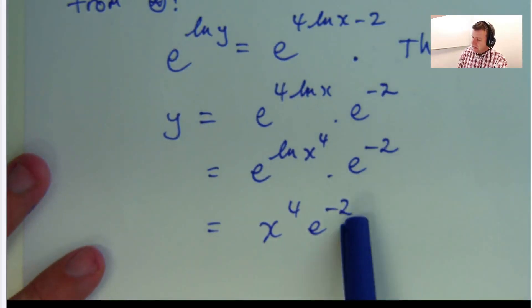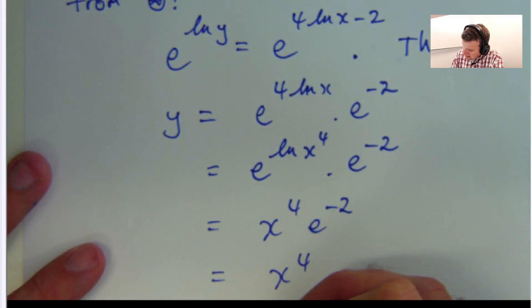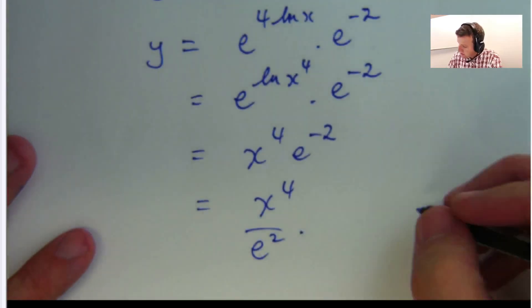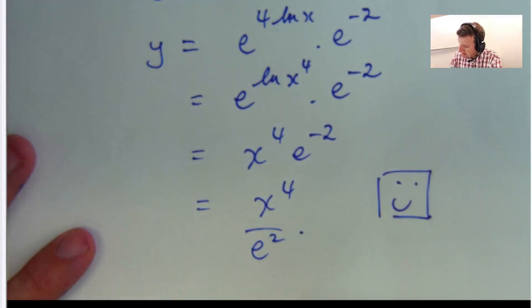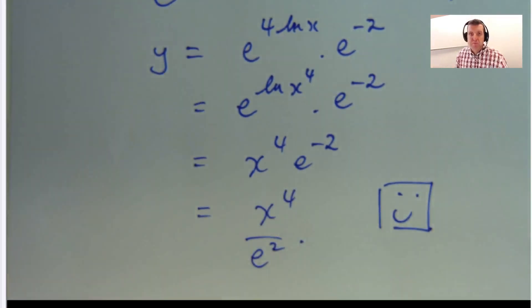Now we've got a negative power here, if I really want to go one step further I can. So we're super happy about that. y is just x to the 4th over e squared.